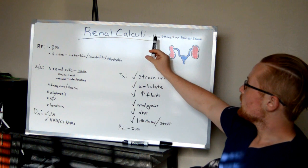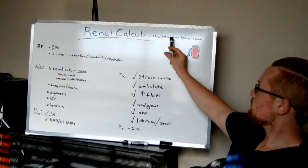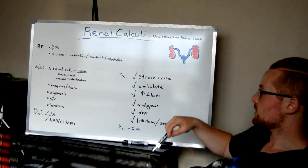Renal calculi means stone. Urolithiasis is a stone in the urine system, or kidney stone. All the same thing, okay?